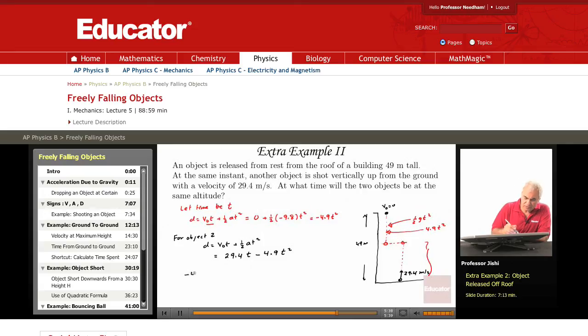So, adding 4.9 T squared, that's the first distance traveled by first object, plus this is the distance traveled by the second object, 29.4 T minus 4.9 T squared, these must add up to 49 meters.